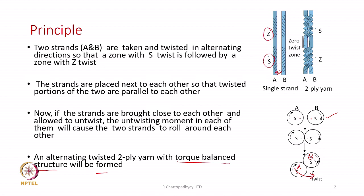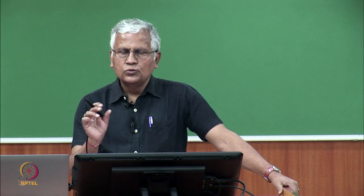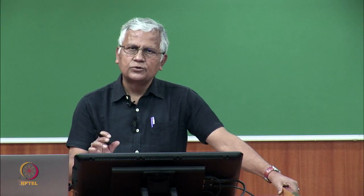Wherever we have S-twisted portions the ply twist will be in the Z direction, and the individual strand twist and the ply twist will balance each other — that is, the torques will balance. As a result we will get a two-strand plied yarn that is torque balanced, and there will be no untwisting torque in the plied structure.